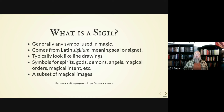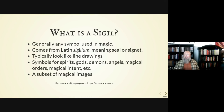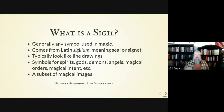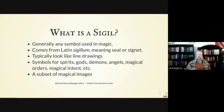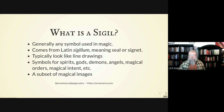Frequently, especially in the Renaissance, maybe all of the sigils in the Renaissance tend to be symbols for different spirits, gods, demons, angels, or things of that nature. Although in modern magic, you do see sigils that are used for magical orders, sigils like Austin Osman Spare's chaos magic sigils, and things like that.